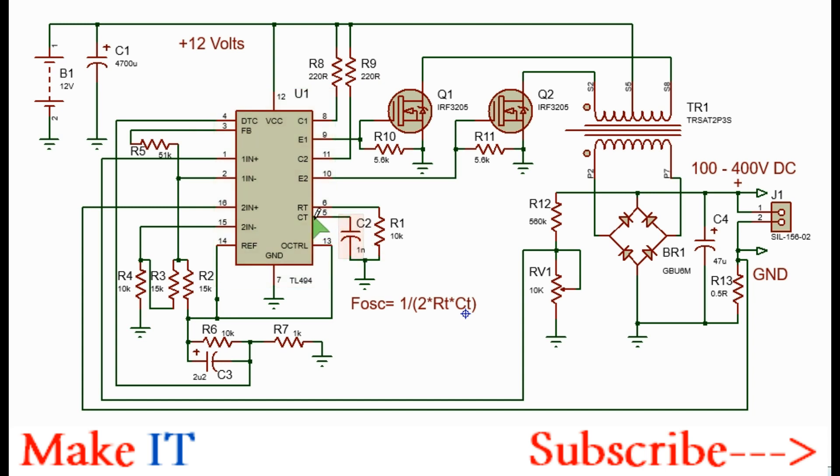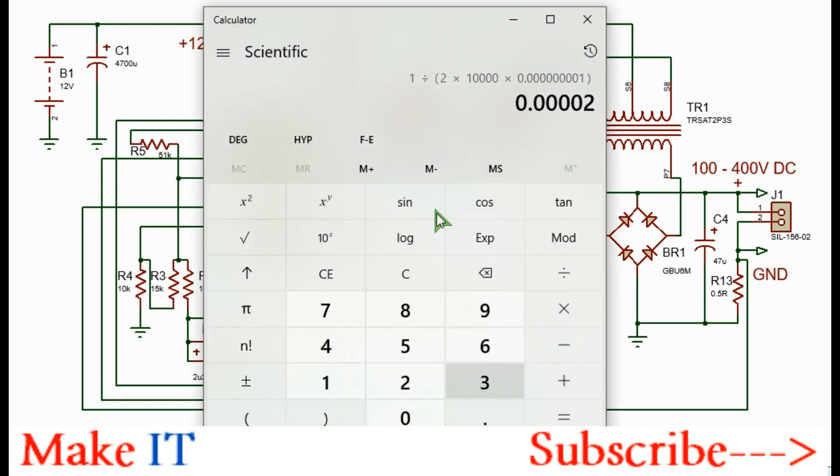For the oscillator, connect the capacitor CT which is 1 nanofarad and the resistor RT which is 10 kilo ohms. This will give you a frequency of 50 kilohertz. The formula is shown here. Because this is push-pull, the frequency calculation is given as shown. This will give you a frequency of 50 kilohertz.